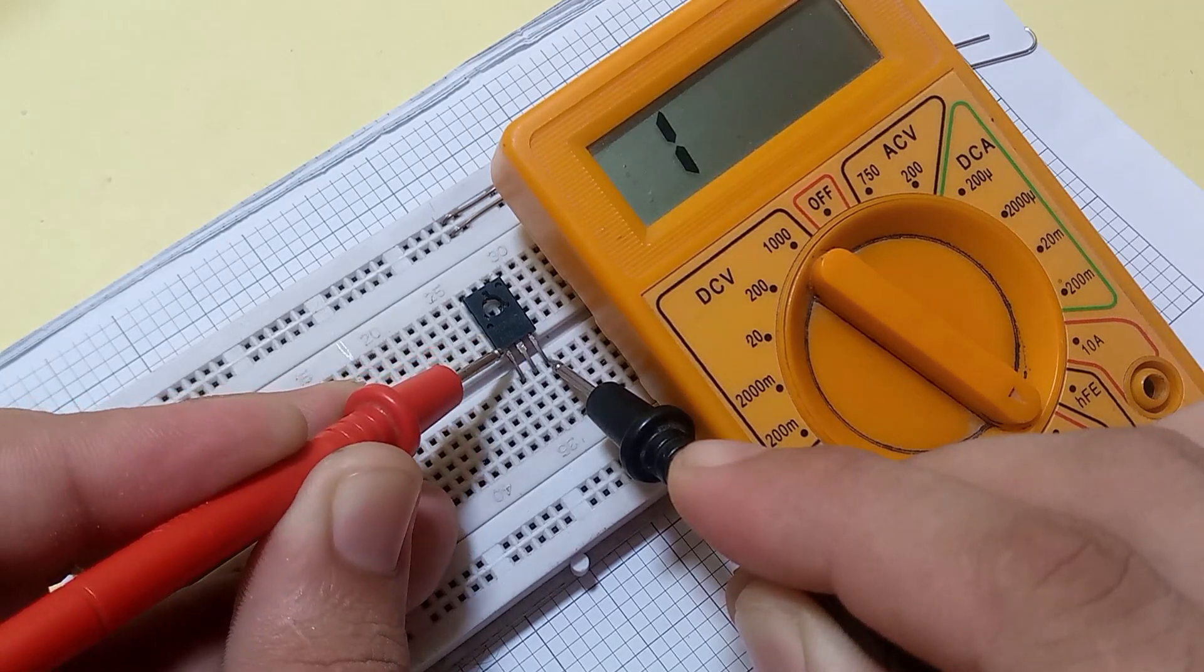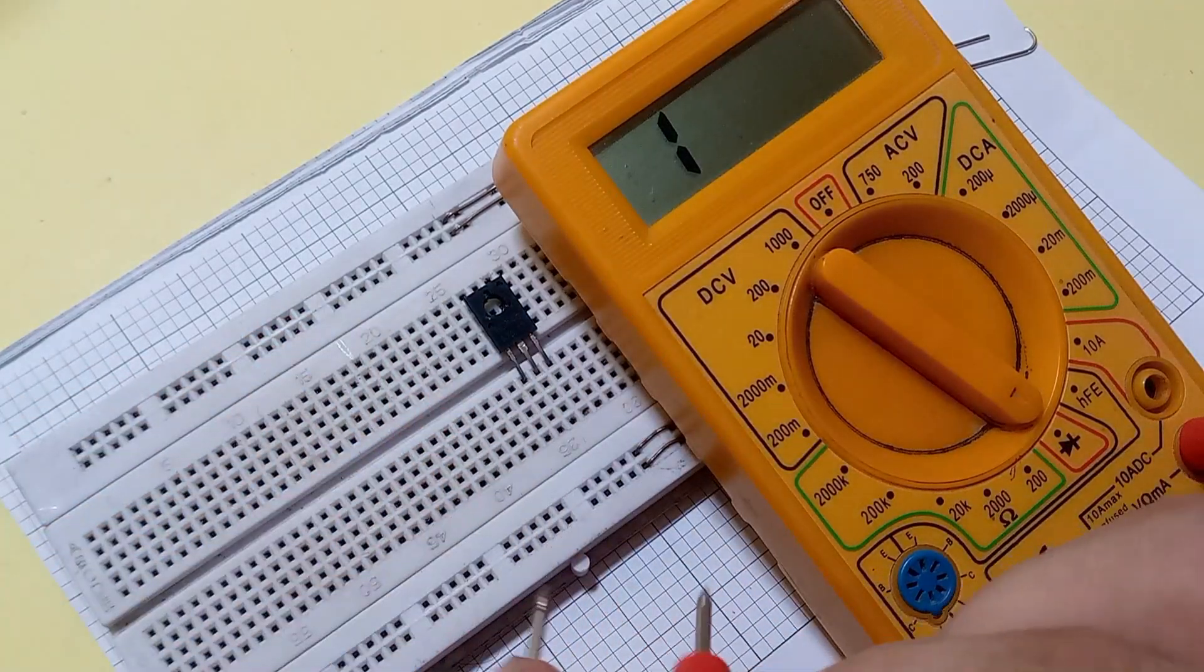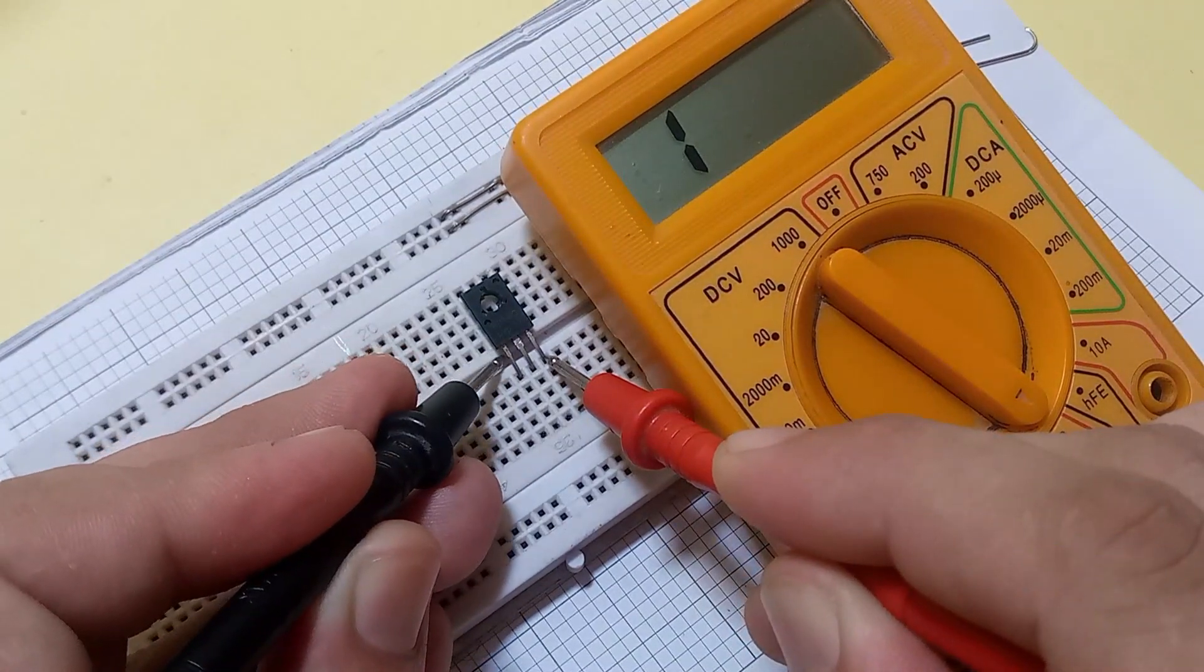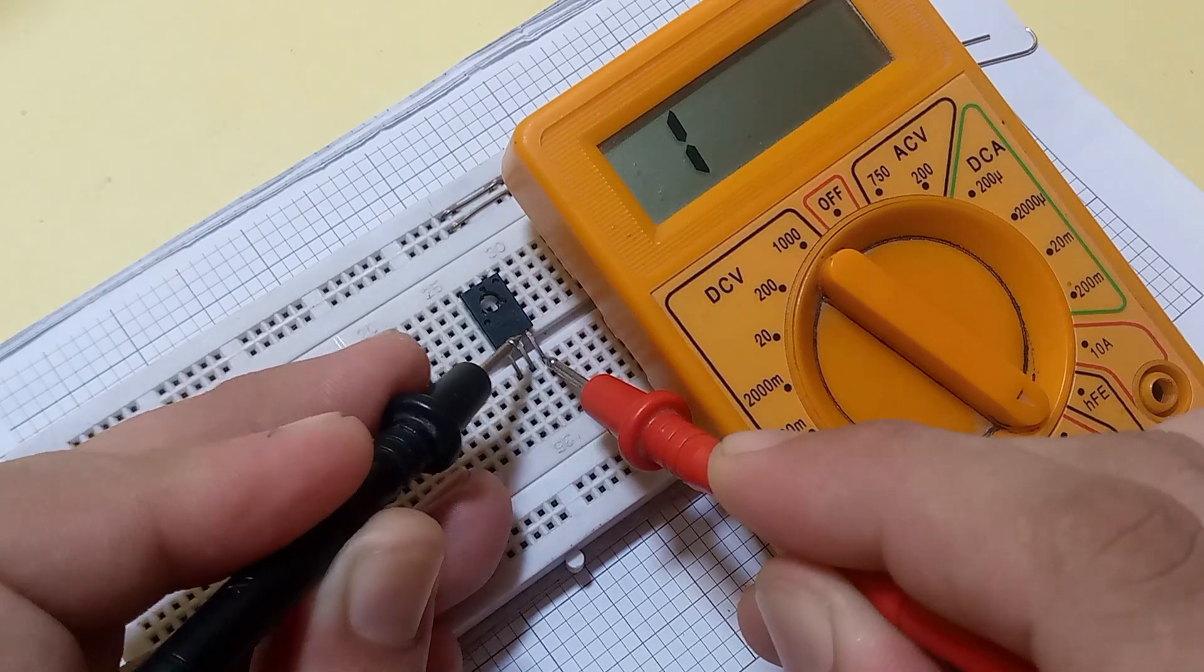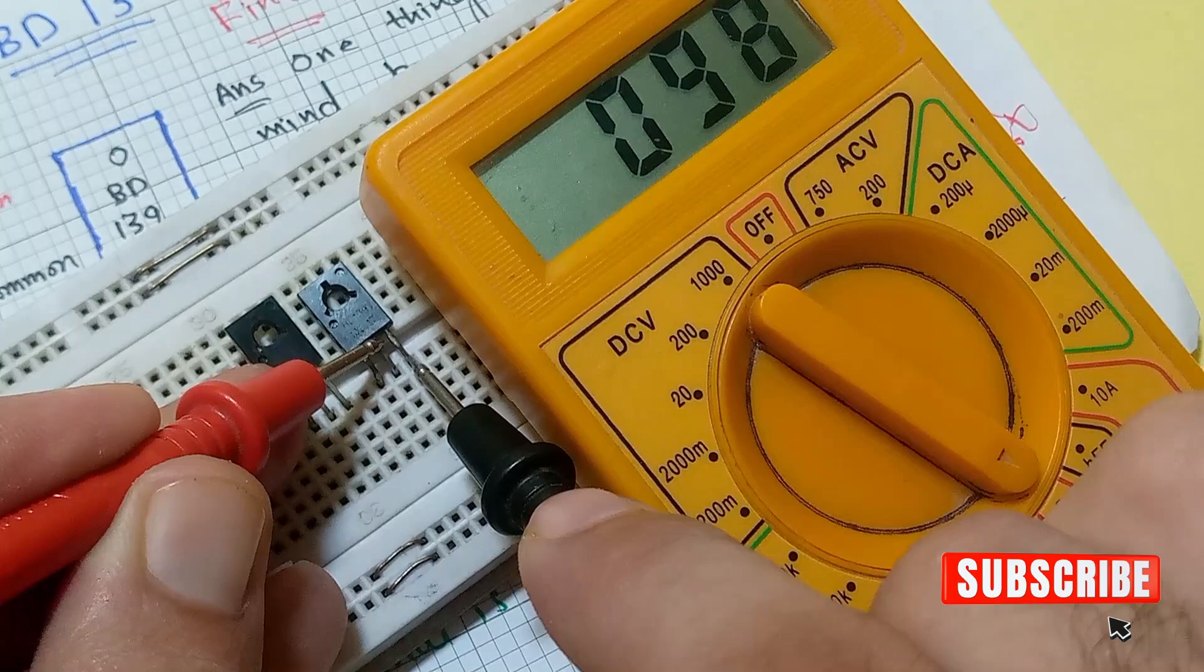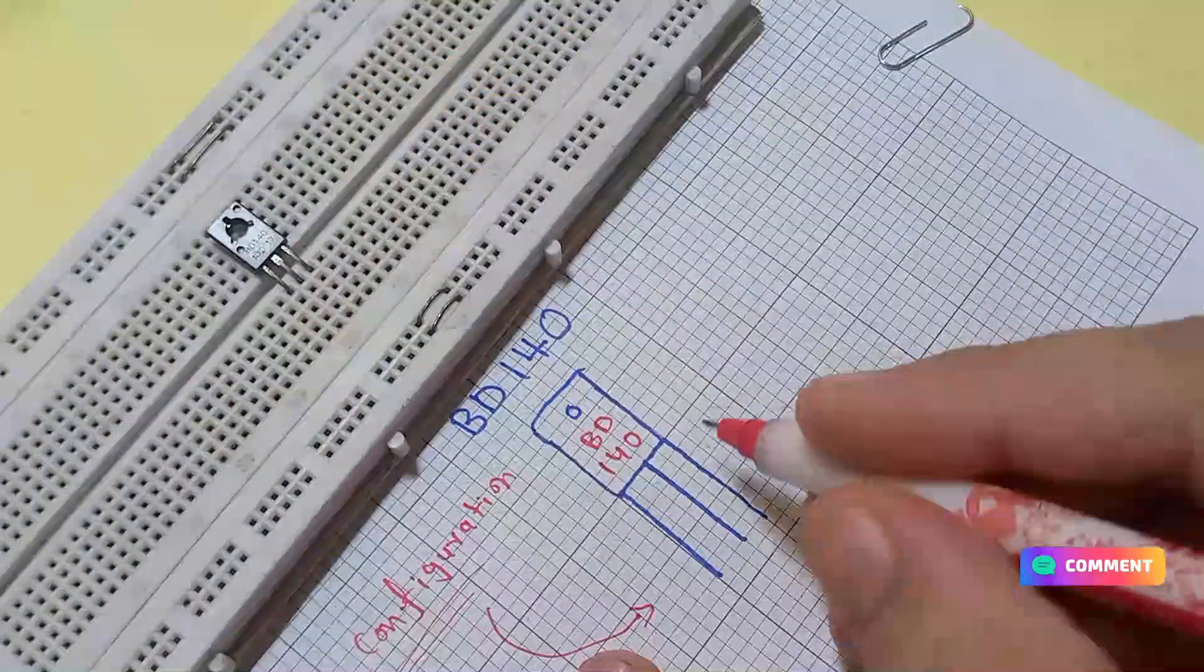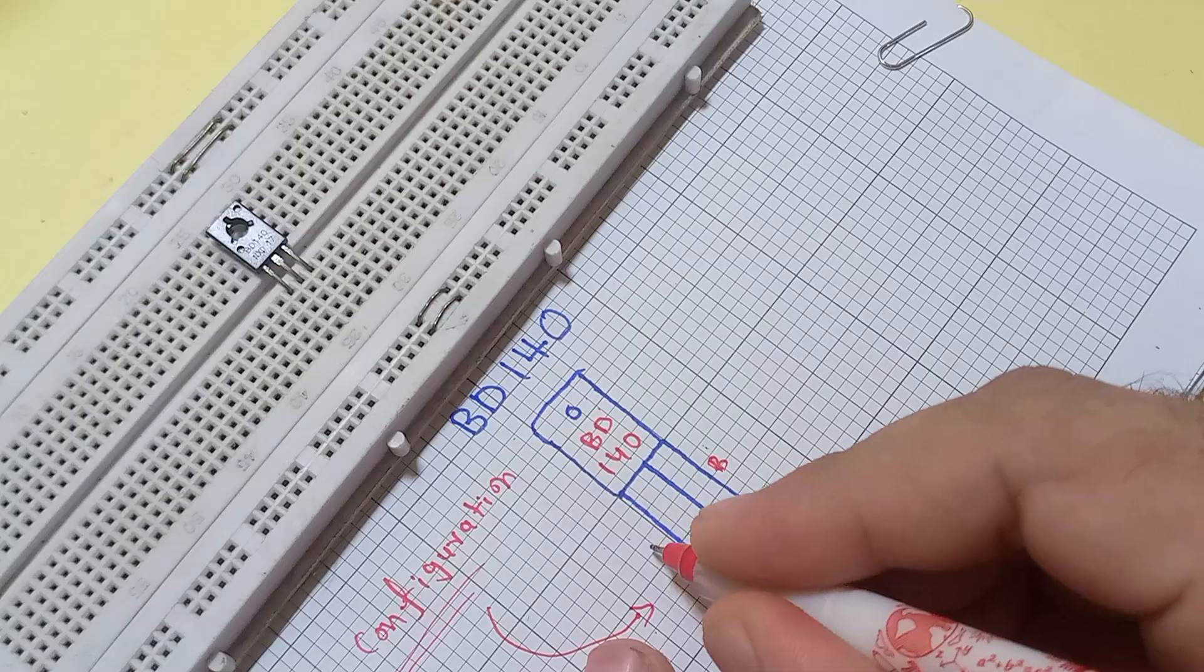If we change the polarity for the right type transistor, it shows no reading. As you see, it shows no reading when we change the polarity. If it shows reading on both sides, it means that the transistor is burnt out, such as this one. From the right side, the first one is base, the second is collector, and the third is emitter.